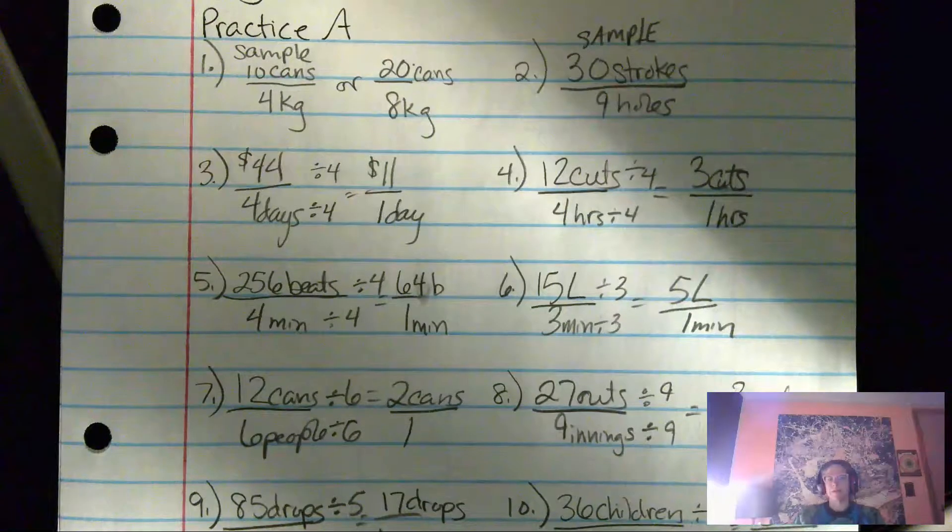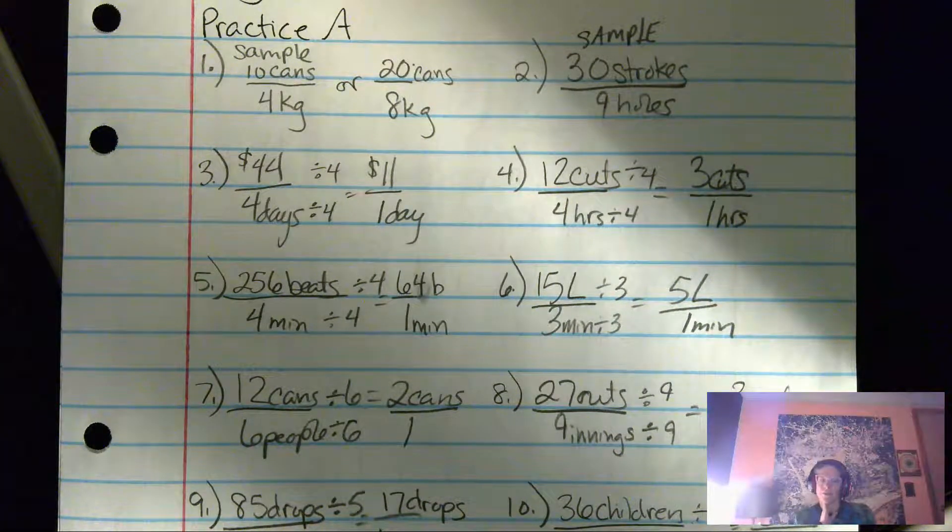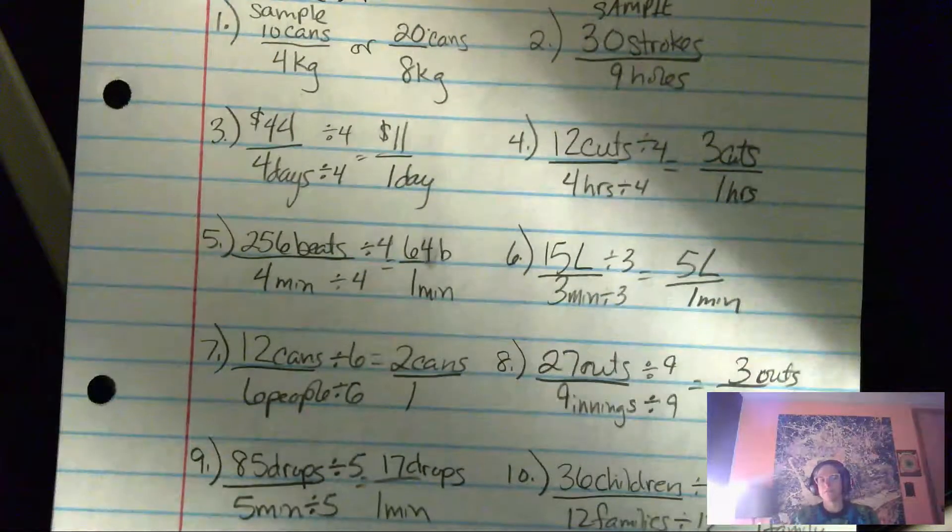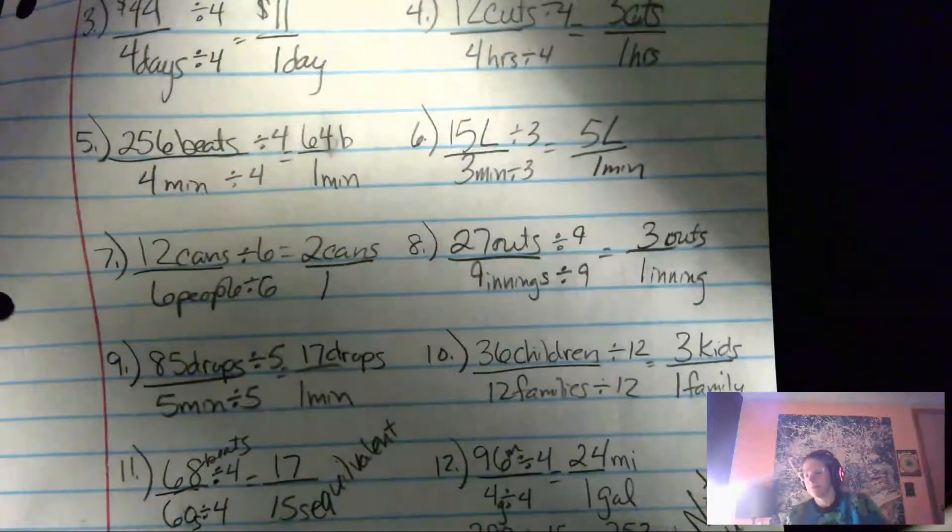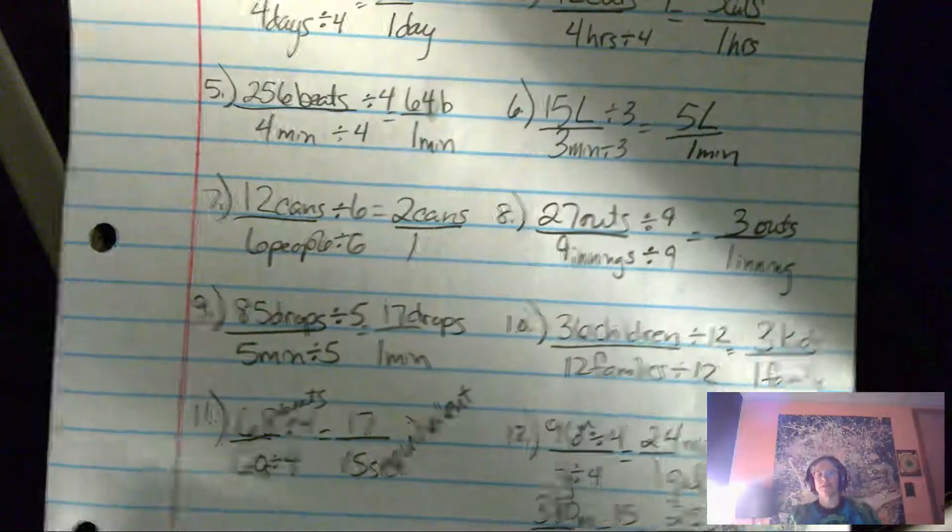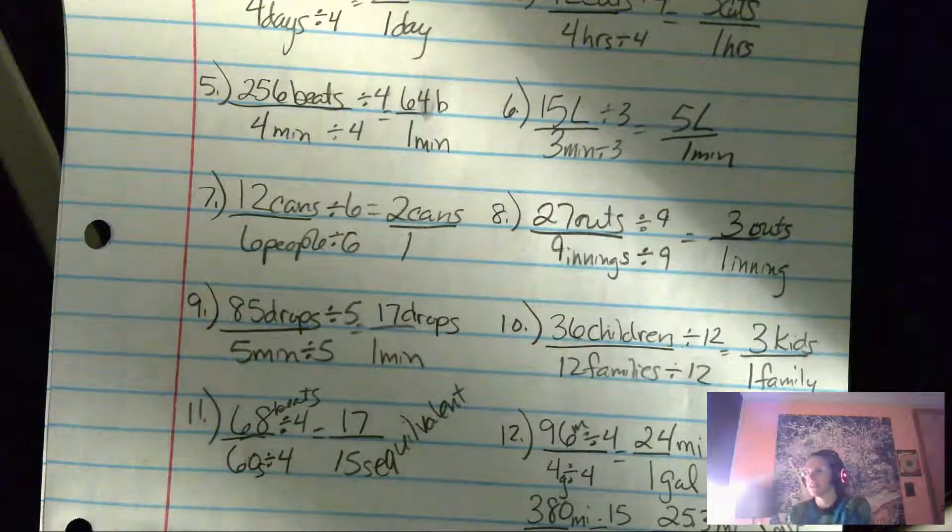Number five is 64 beats per minute. Number six is five liters per minute. Number seven is two cans per person. Number eight is three outs per inning. Number nine is 17 drops per minute. Number 10 is three kids per family.